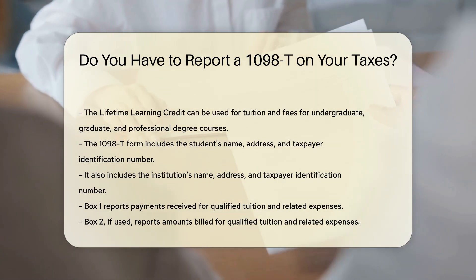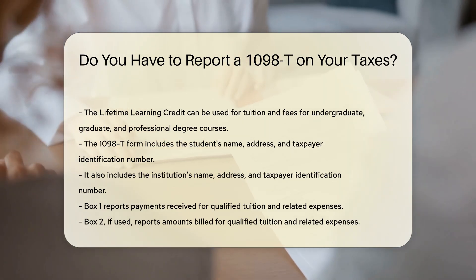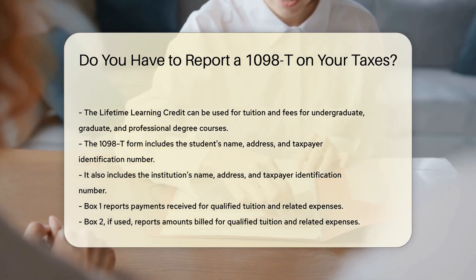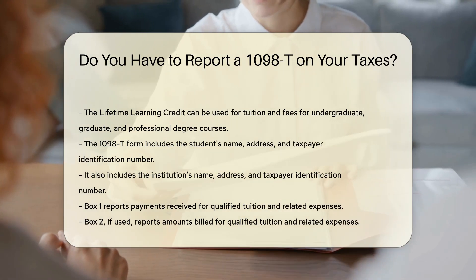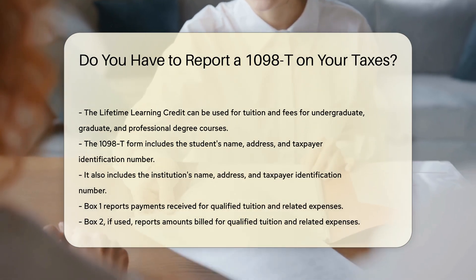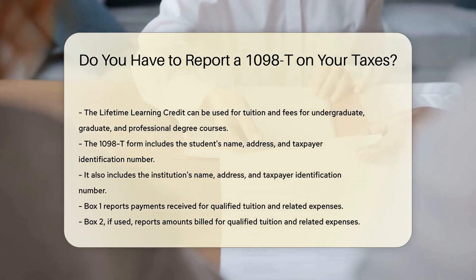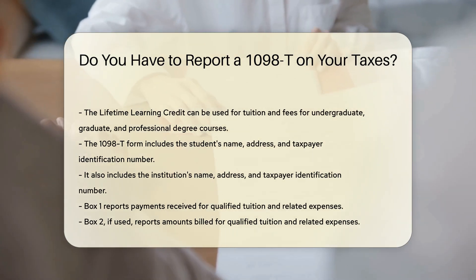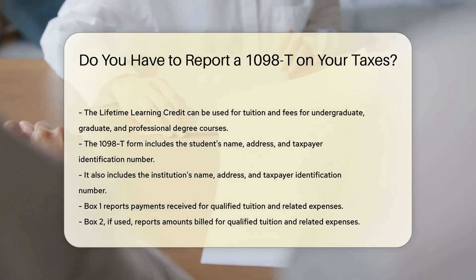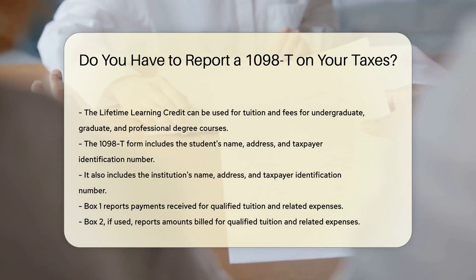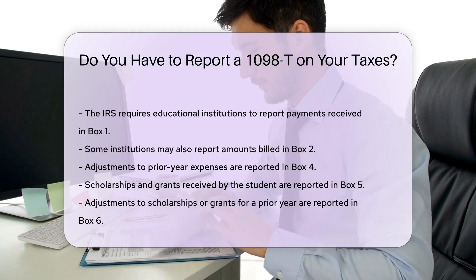Box 1 of the 1098-T form reports payments received for qualified tuition and related expenses. Box 2, if used, reports amounts billed for qualified tuition and related expenses. The IRS requires educational institutions to report payments received in Box 1, though some institutions may also report amounts billed in Box 2.